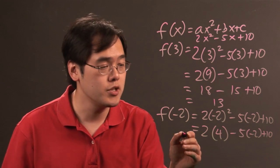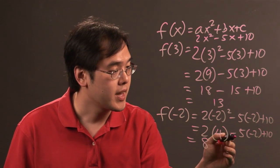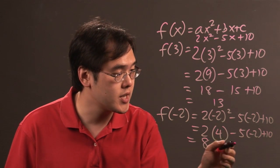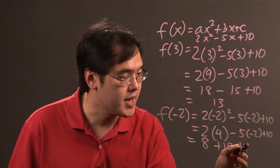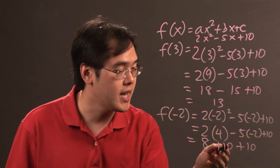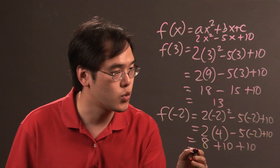Now again do the multiplication. 2 times 4 is 8. Now negative 5 times negative 2 that's going to give you positive 10 and then you have another plus 10 at the end. Now 8 plus 10 is 18 plus 10 is going to give you 28.